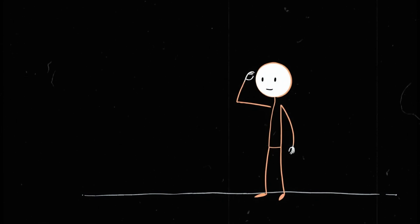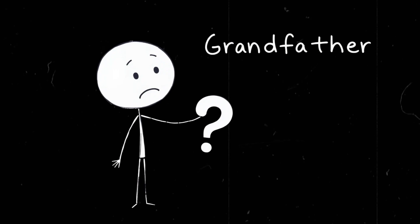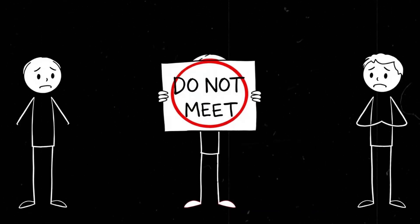For example, let's say you go back in time and stop your grandparents from meeting. That means your parents were never born. Which means you were never born. Which means, who exactly went back in time to stop them from meeting? This is called the grandfather paradox, and it's one of the biggest reasons scientists think time travel to the past isn't possible.